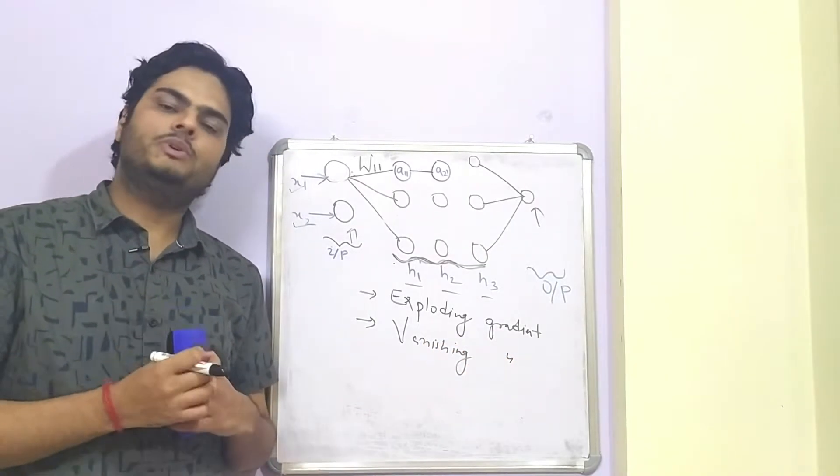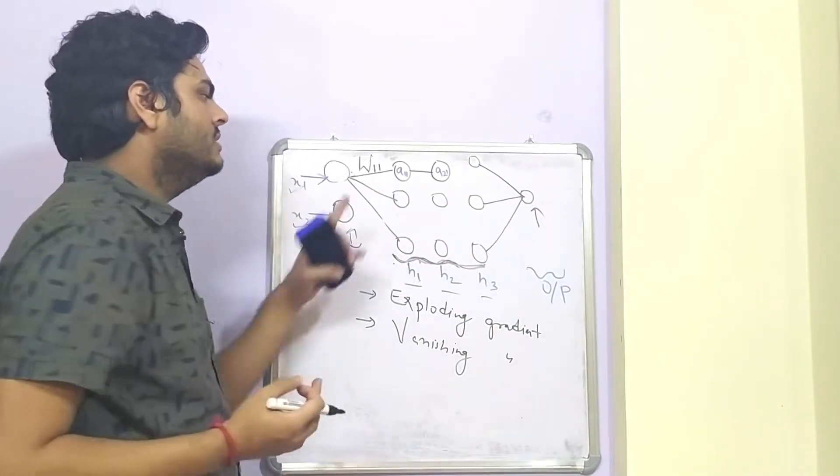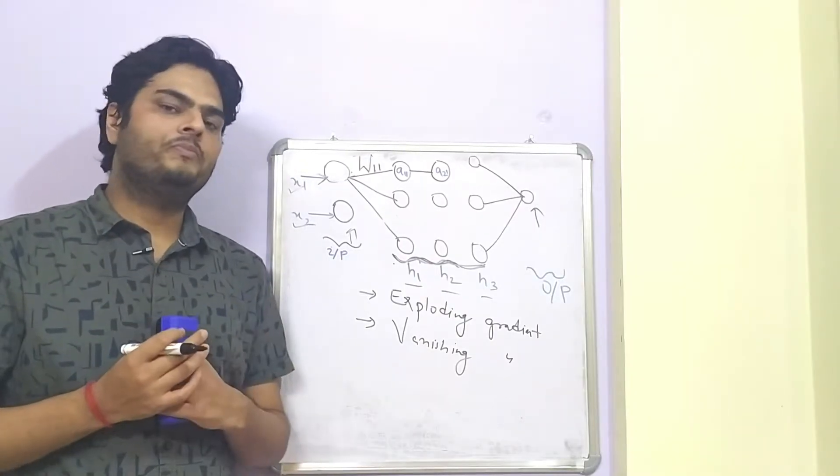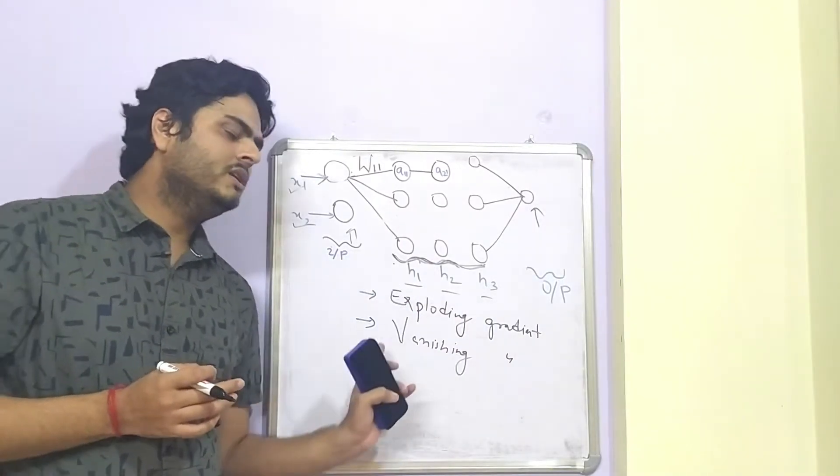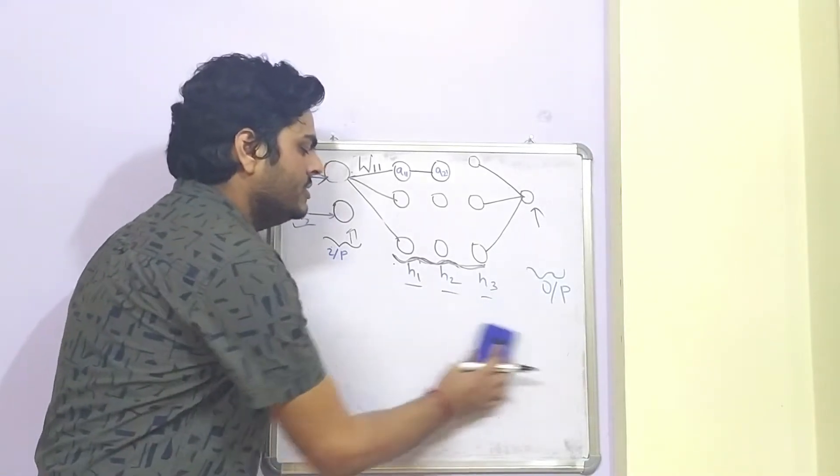So in neural network, first we have to initialize the weights and then through back propagation, the weight updation happens. That is what we discussed in last video. Now, what are these exploding gradient and vanishing gradient problems? We will take an example and try to understand.